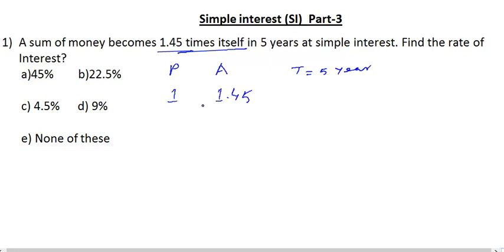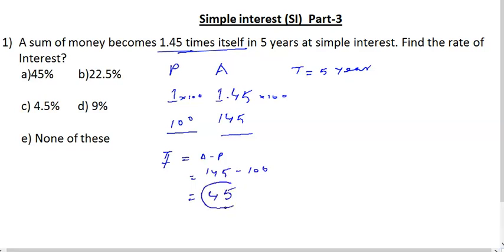1.45 times means if you take the principal as 100, the amount becomes 145. Interest equals amount minus principal, so 145 minus 100. So 45 is the total amount of interest.